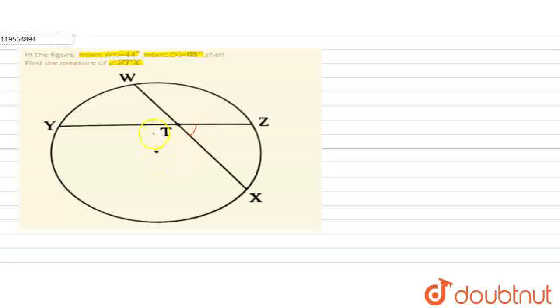When two chords intersect internally, the angle formed equals half the sum of the intercepted arcs. So angle ZTX equals half of arc WY plus half of arc ZX.